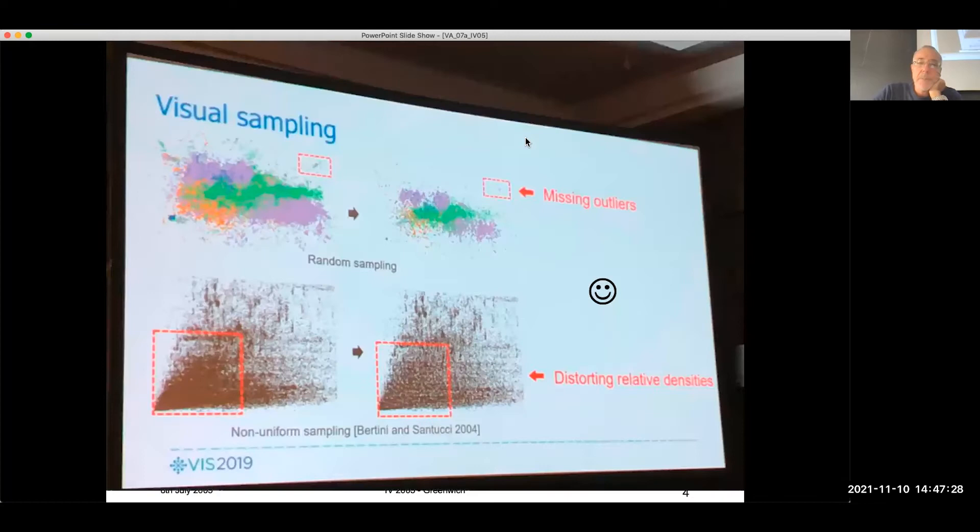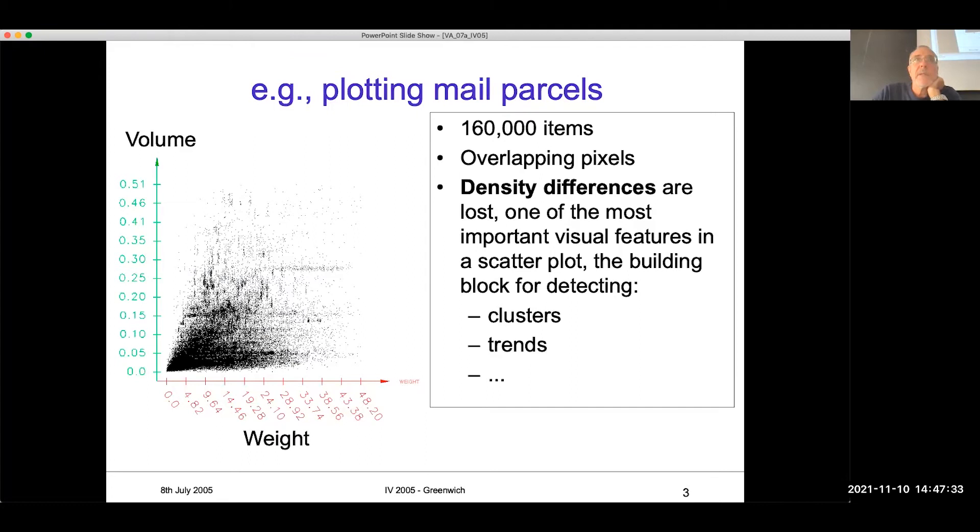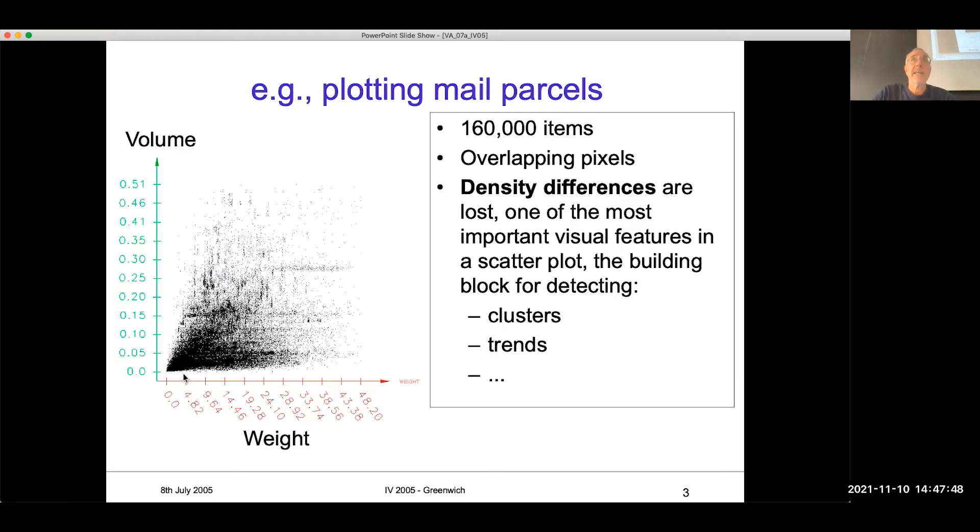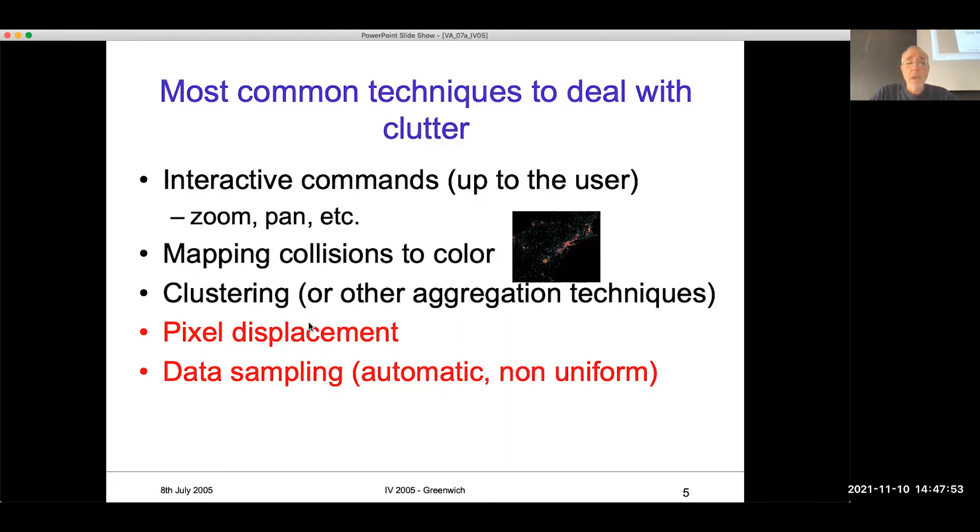First of all, the problem of the clutter is well known. And a lot of people did some attempt to solve it, still working on it. And you can give to the user some commands. Zoom, panning, and you can go inside. If I can zoom here, zooming, zooming, zooming, I will discover the density differences. But I lose the overview.